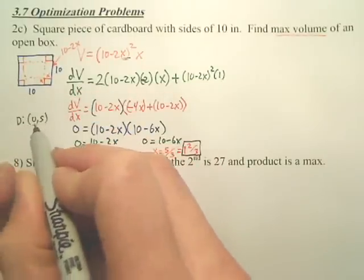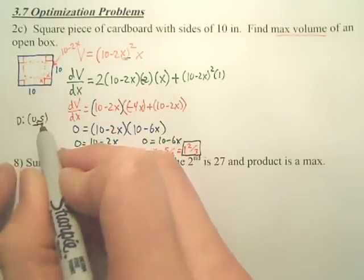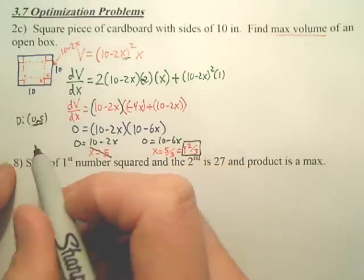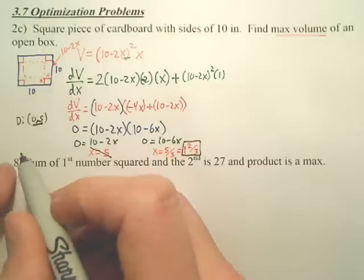It's sometimes good to think about your domain. Your domain is 0 to 5. You can't have something bigger than 5 for x. You can't have something less than 0 because you have to cut something off.